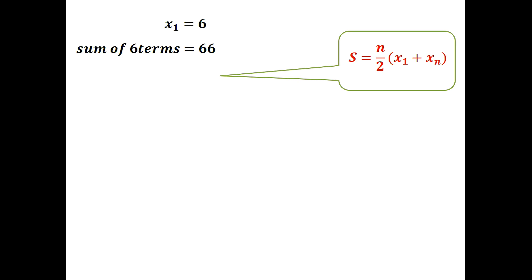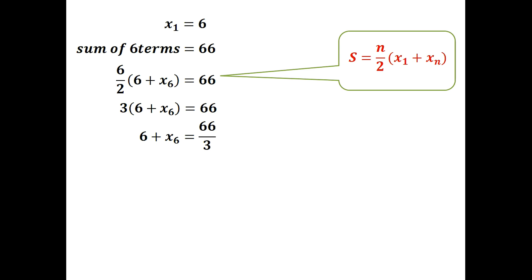Sum of 6 terms = (6/2) × (first term + sixth term) = 3 × (6 + sixth term) = 66. Dividing both sides by 3: 6 + sixth term = 22. Therefore the sixth term = 22 − 6 = 16.